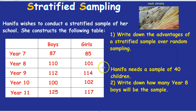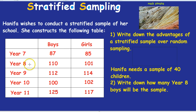If we just picked randomly, she's doing a sample of 40 children and might end up with 20 year 8 boys and 20 year 7 boys. Does that really represent the school properly? If you ask those boys their opinion on something, you might not get a fair sample — they might be biased because they're younger or because they're boys. So a stratified sample needs to make sure all the different groups are represented.